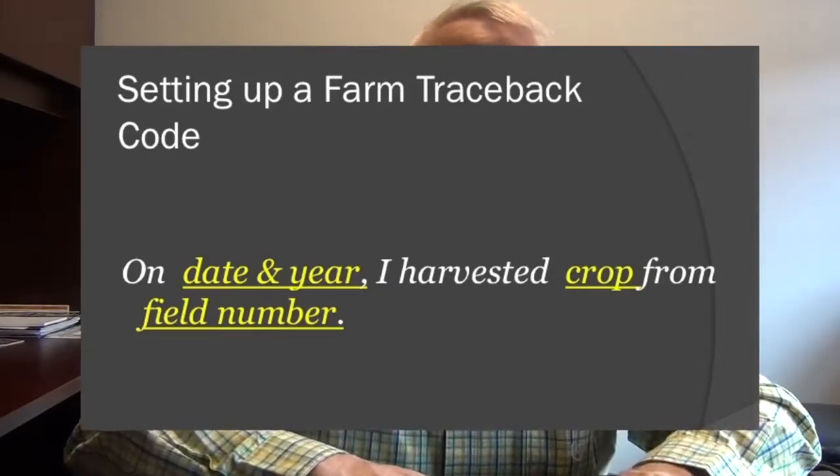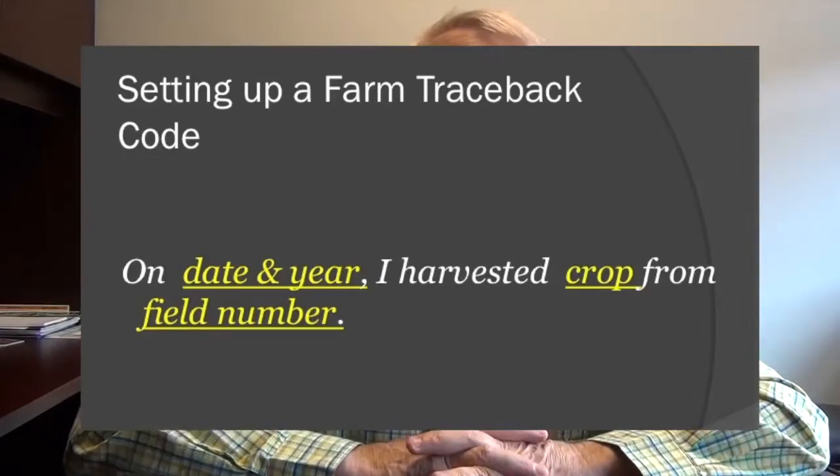That takes us to the next section on crop codes. When we start to talk about crop codes, you'll see in your manual that you have a generic list from 1 to 99 of various crops. That's a generic list — it goes through about 46 or 47 different crops — just to give you an idea of how this thing works.